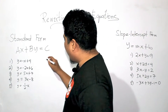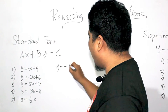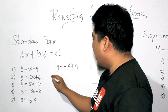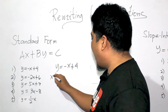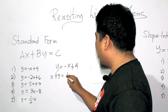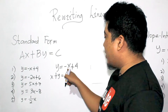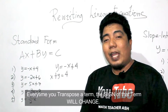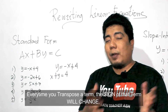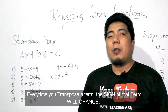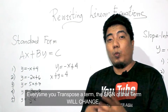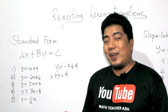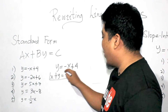For number one, we have Y is equal to negative X plus 4. So we transpose X to the left side. This becomes X plus Y is equal to positive 4, because the negative X changes sign when transposed. Remember: every time you transpose, regardless of direction, the sign of that term changes — positive becomes negative, and negative becomes positive. This is already your final answer.